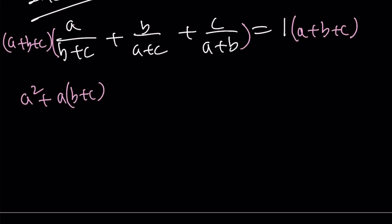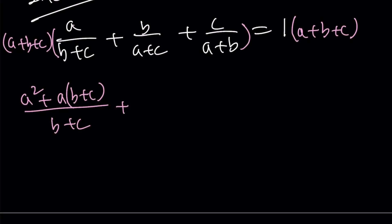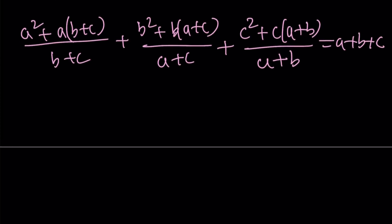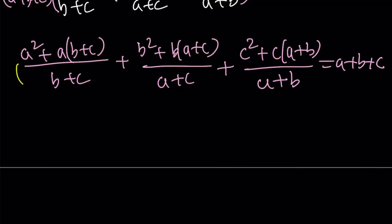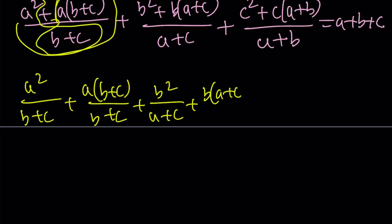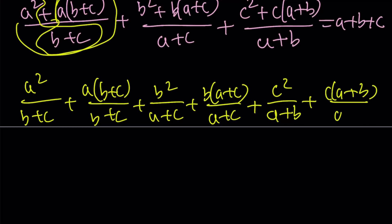Then b² + b(a+c), all divided by (a+c). Then c² + c(a+b), divided by (a+b). And on the right side this equals (a+b+c). Now we separate each fraction into two parts: a²/(b+c) + a(b+c)/(b+c), then b²/(a+c) + b(a+c)/(a+c), then c²/(a+b) + c(a+b)/(a+b). We can cross out (b+c), (a+c), and (a+b) in the second terms since none of them are zero.